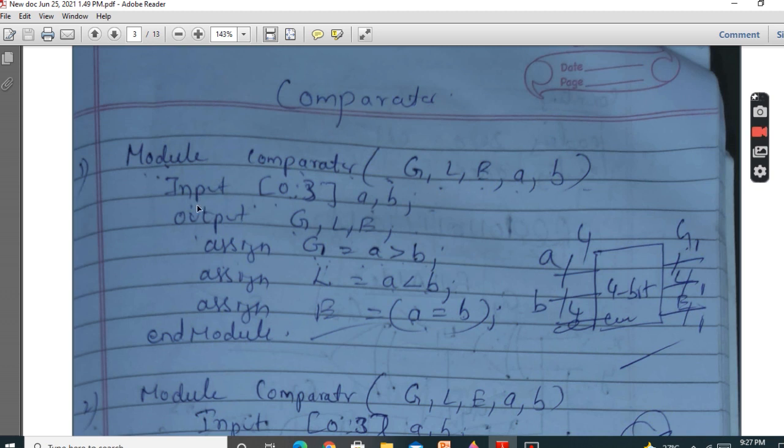So this we have declared here. So input, 4 bits. Array of 0 to 3. So you will get A, B. So both are 4 bits. Output G, L, E. All are single bit.